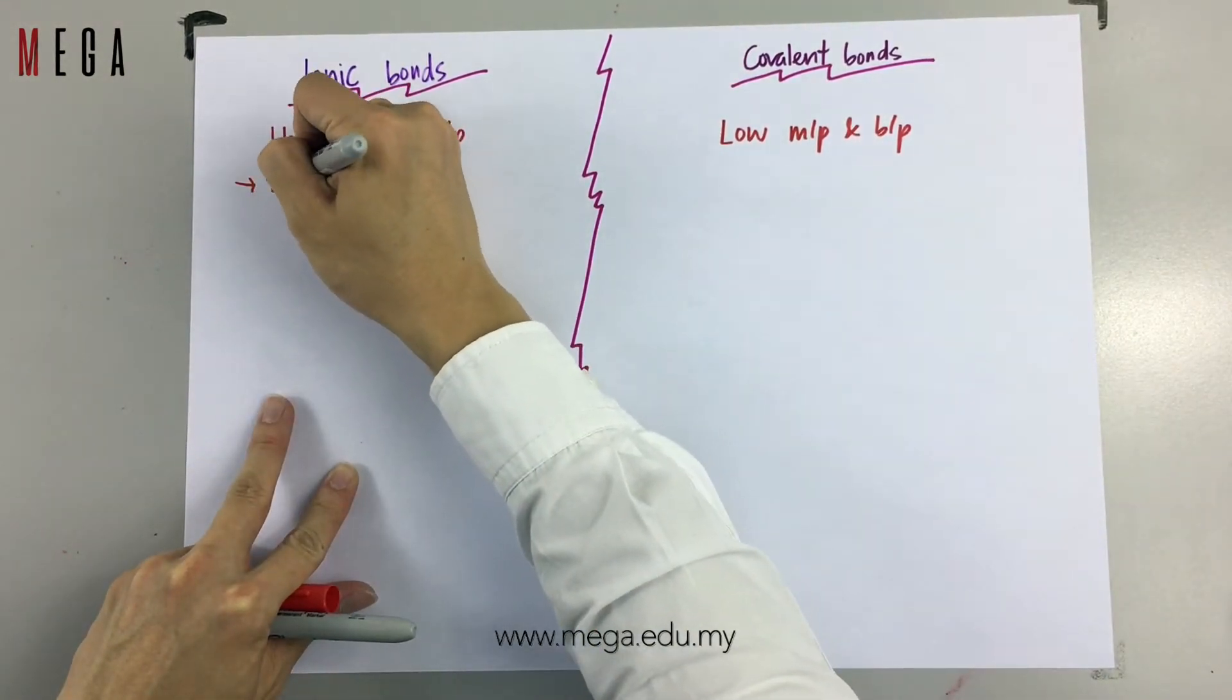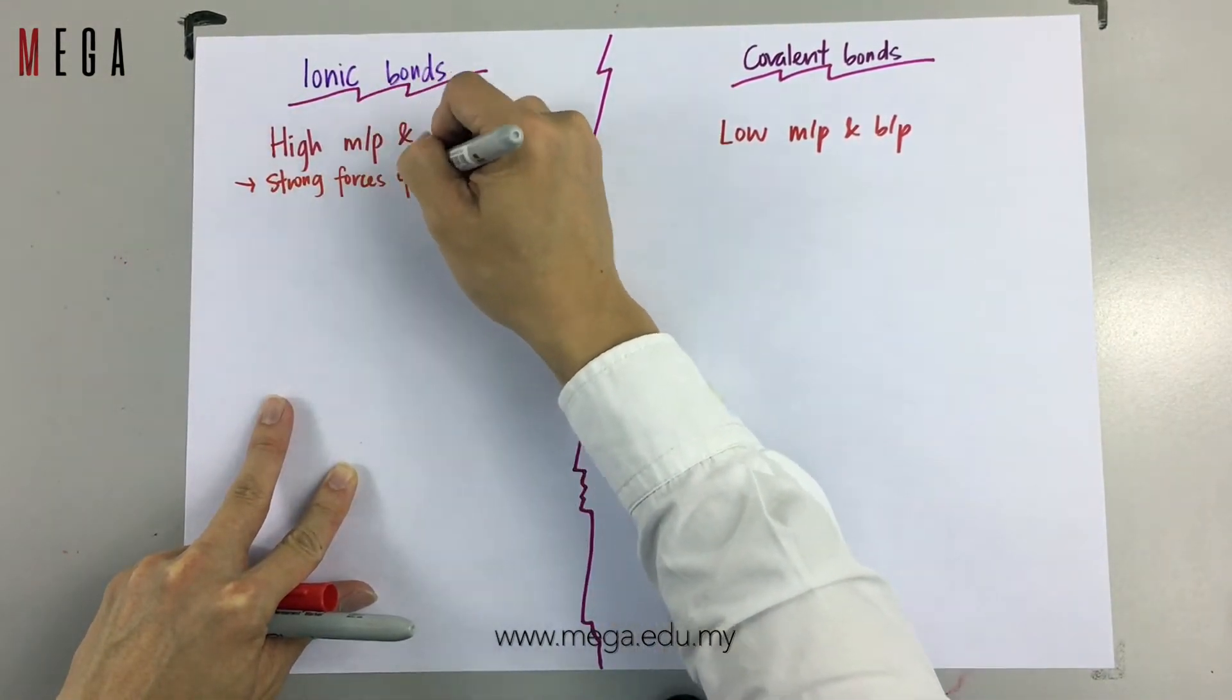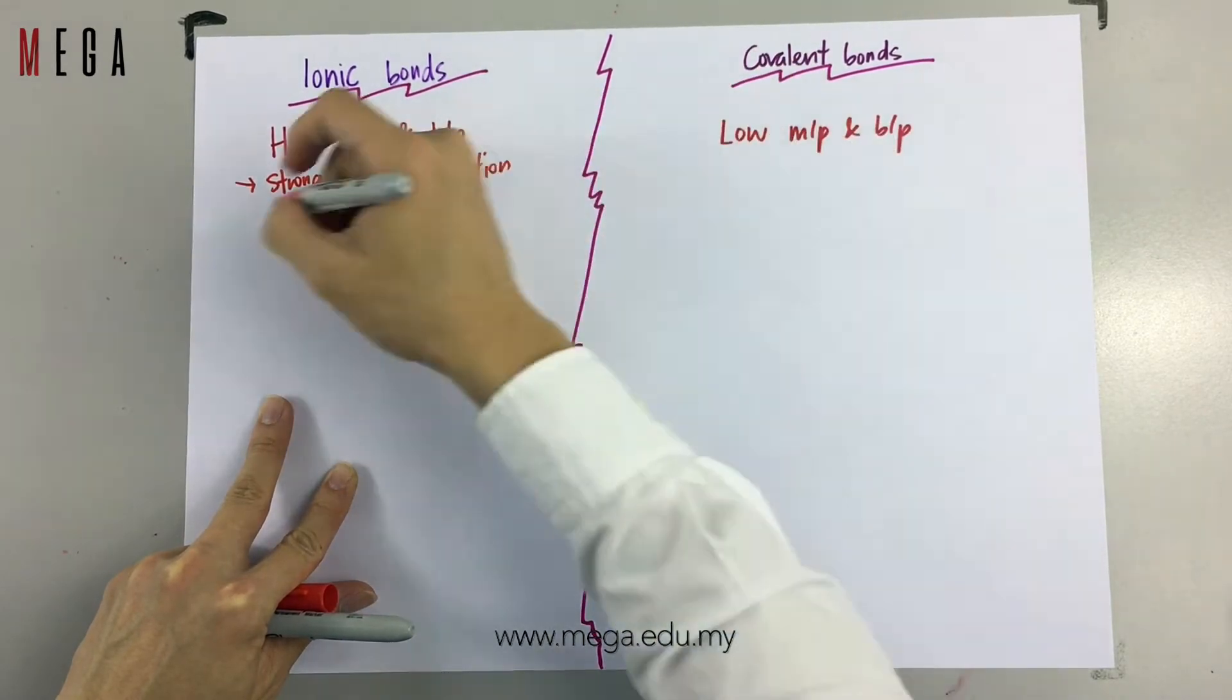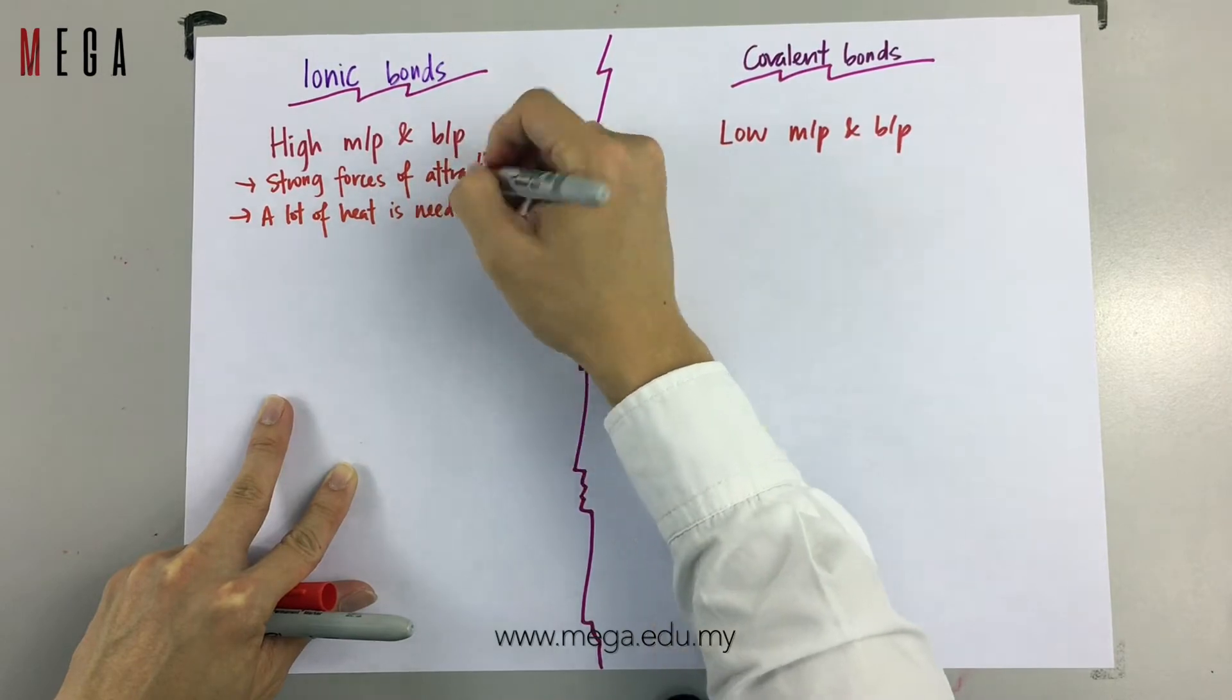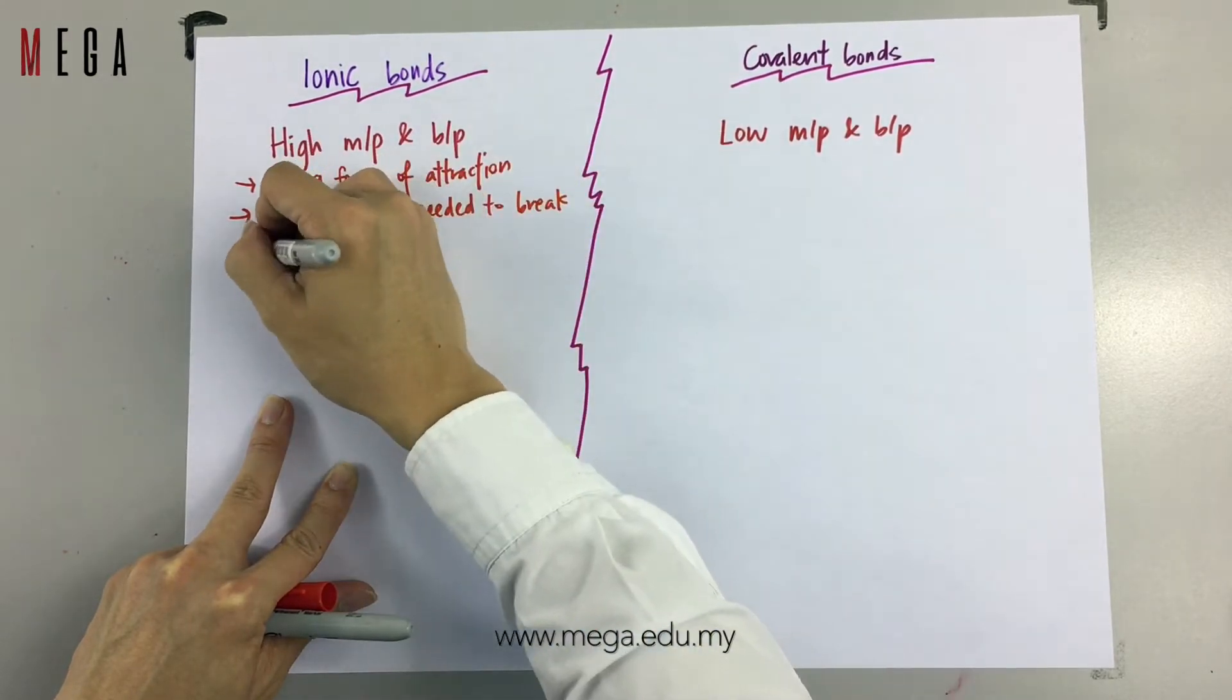Here comes the reason why. Ionic compounds have high melting point and boiling point because they have strong forces of attraction. Therefore, a lot of heat is needed to break the bond.